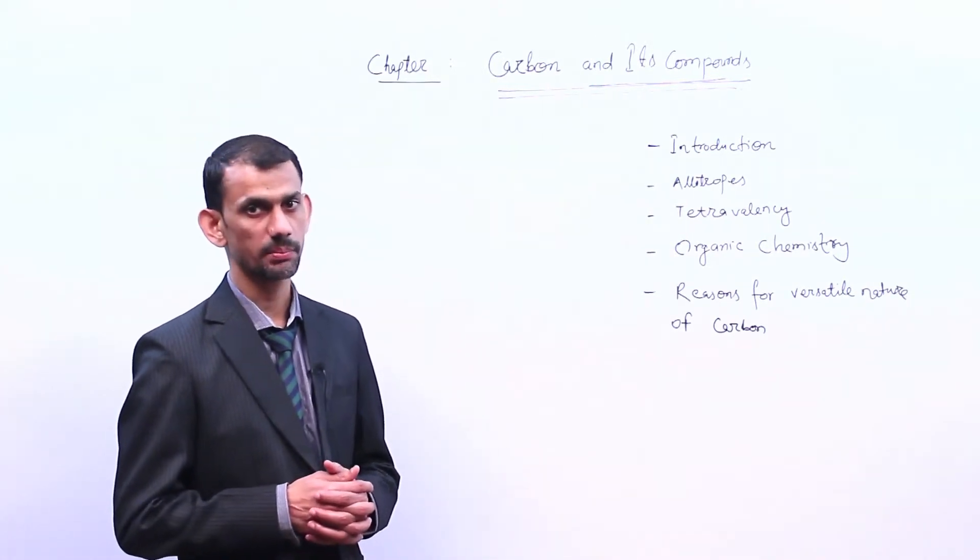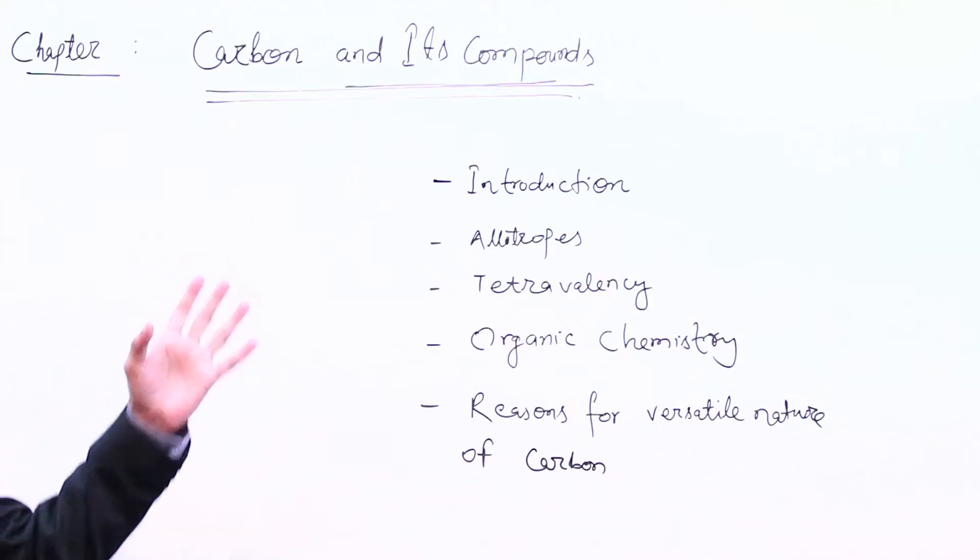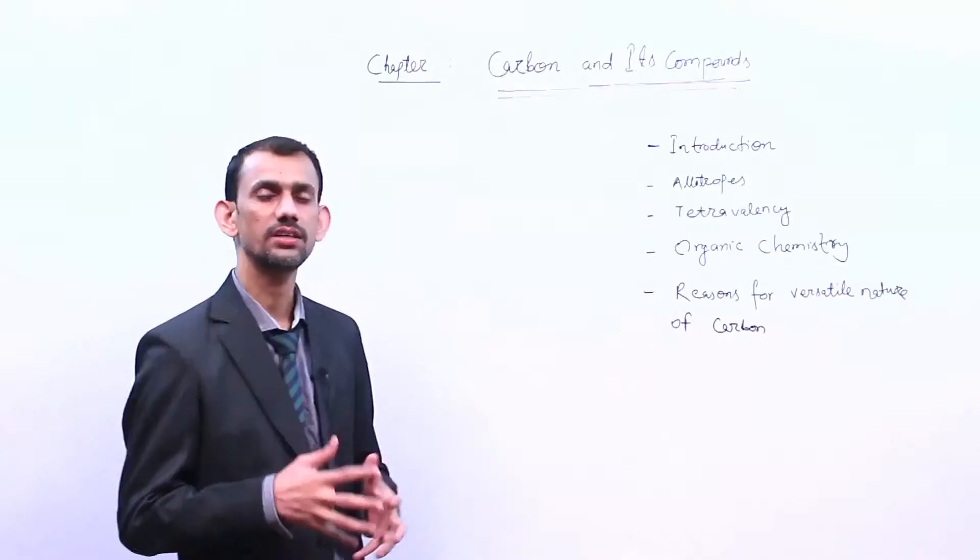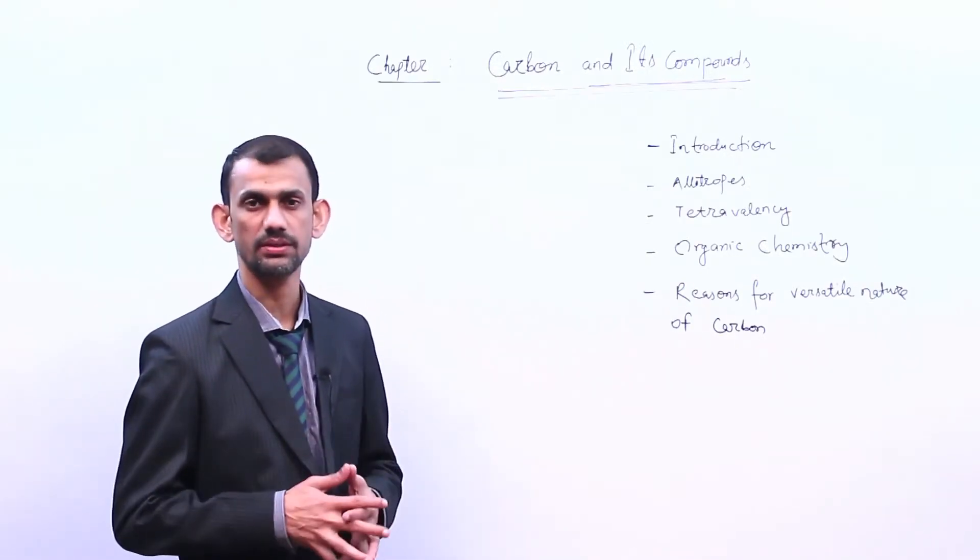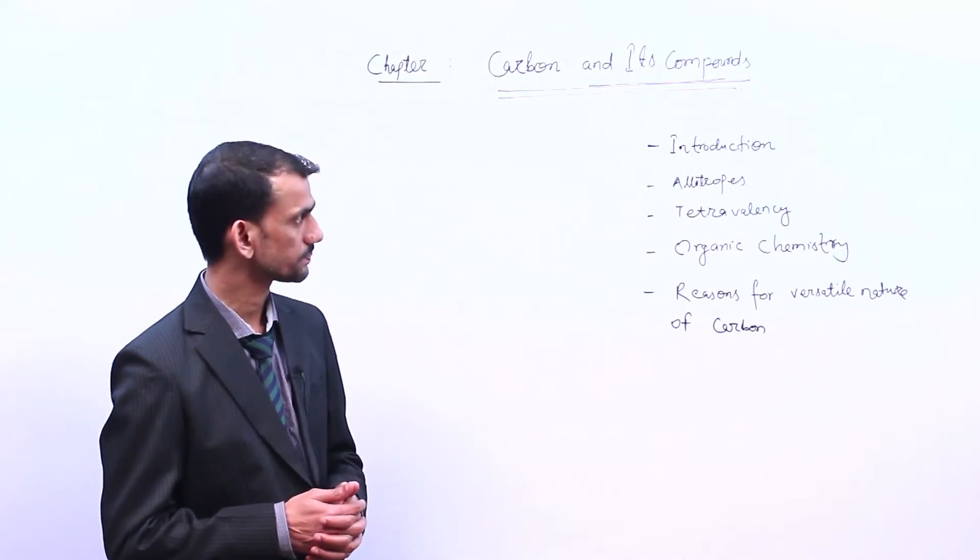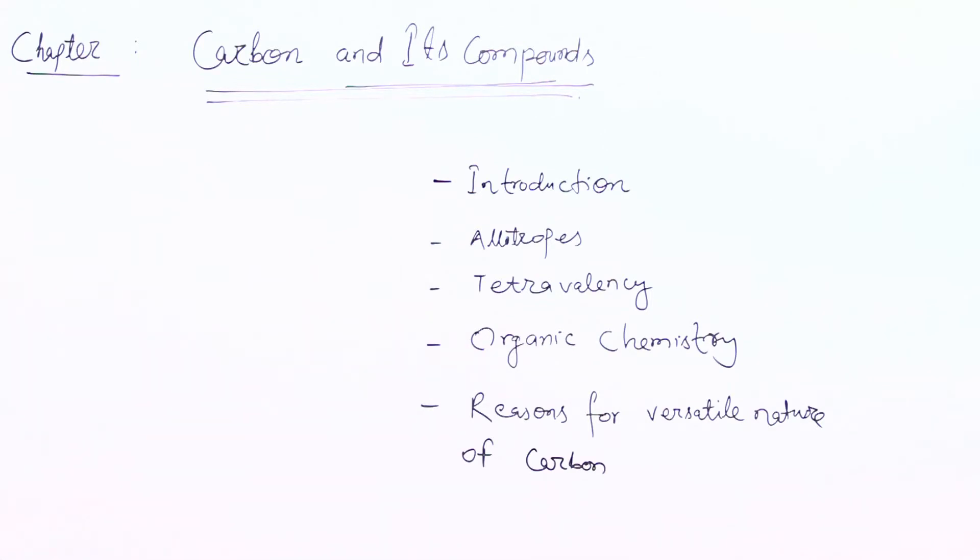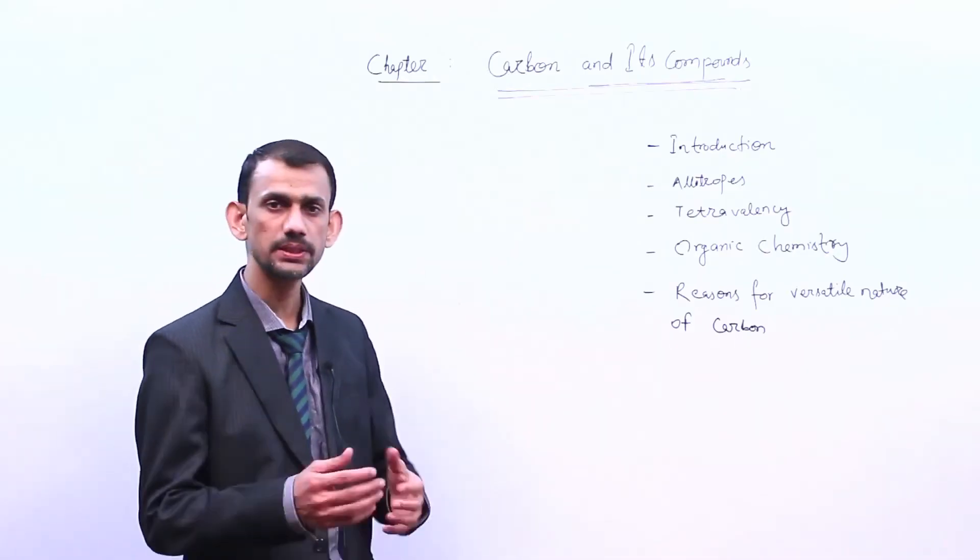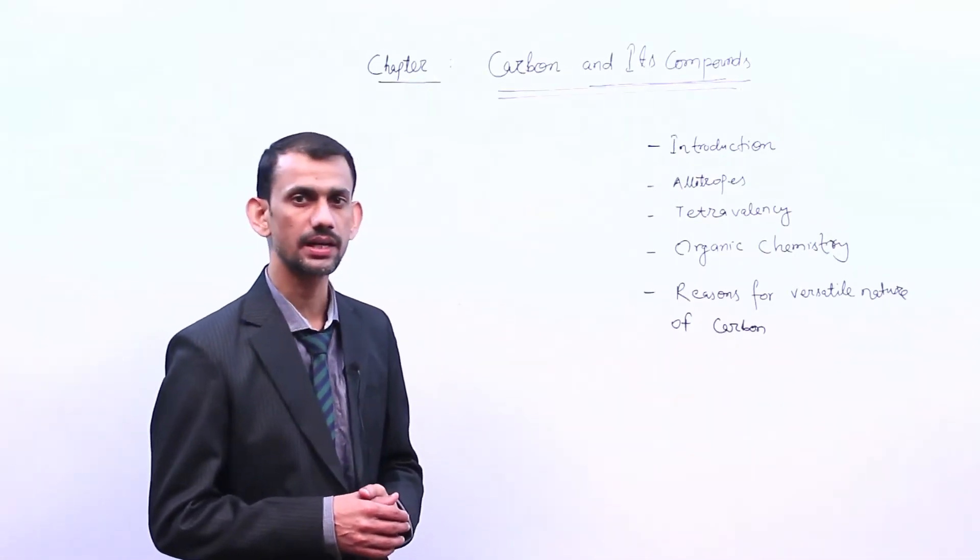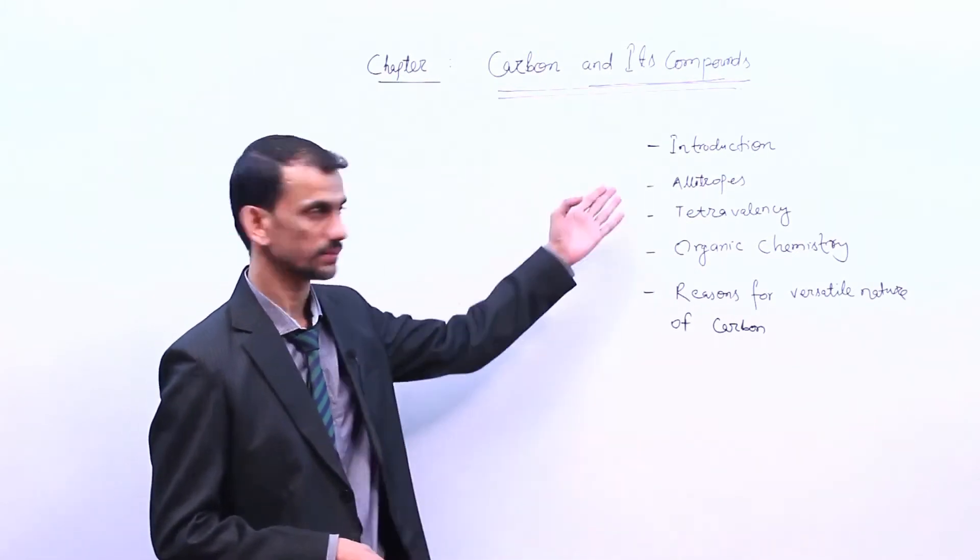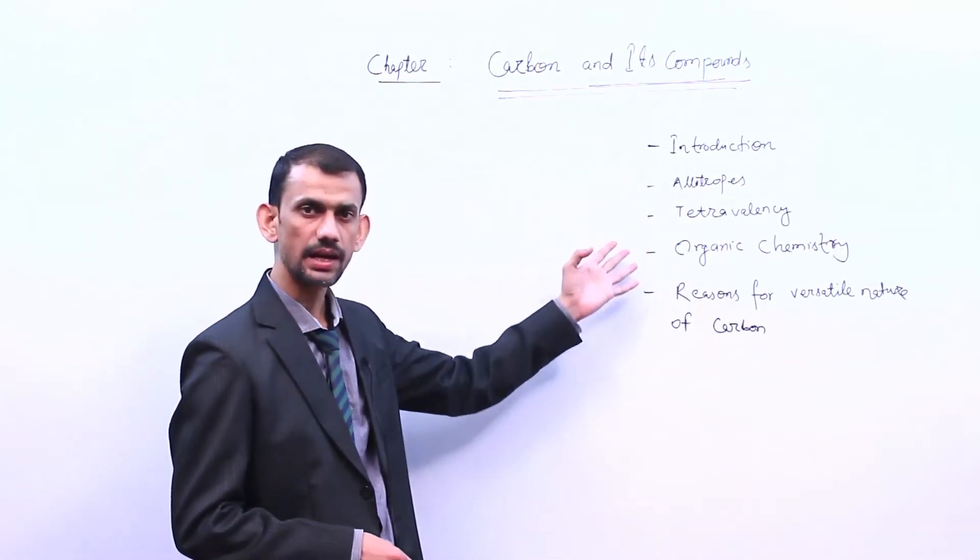Let's begin with carbon and its compounds. In this chapter, we will learn about different forms called allotropes of carbon and a special characteristic of carbon called tetravalency.